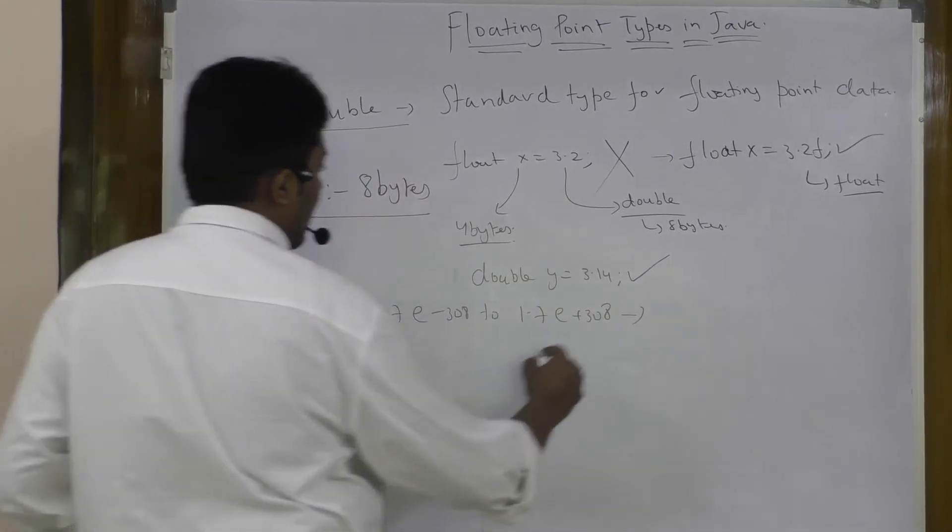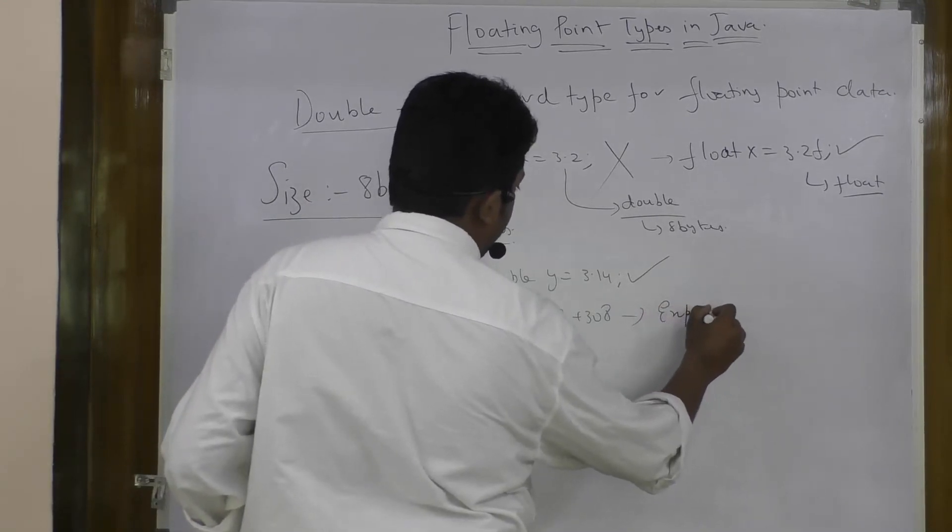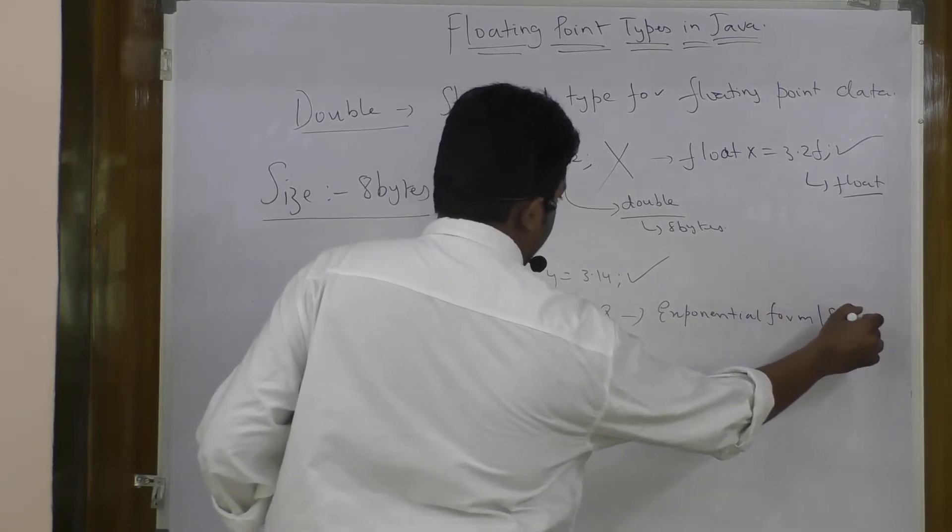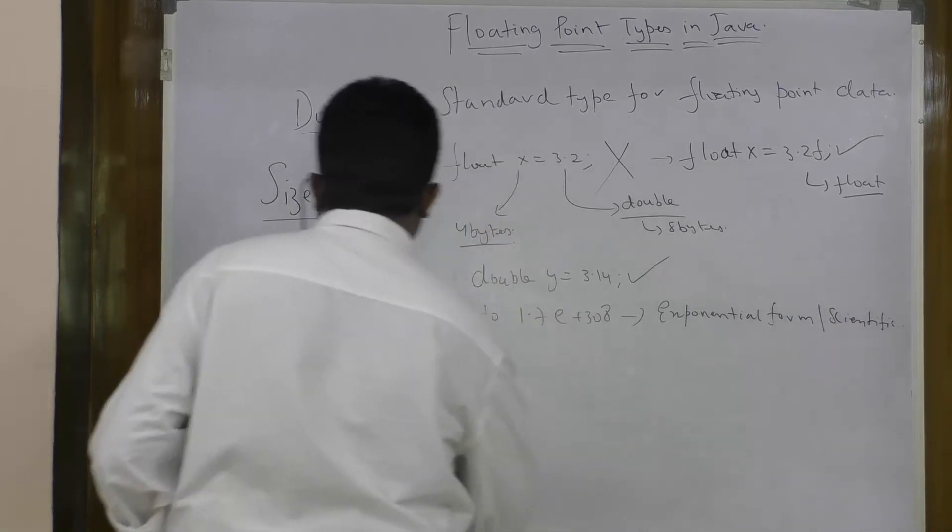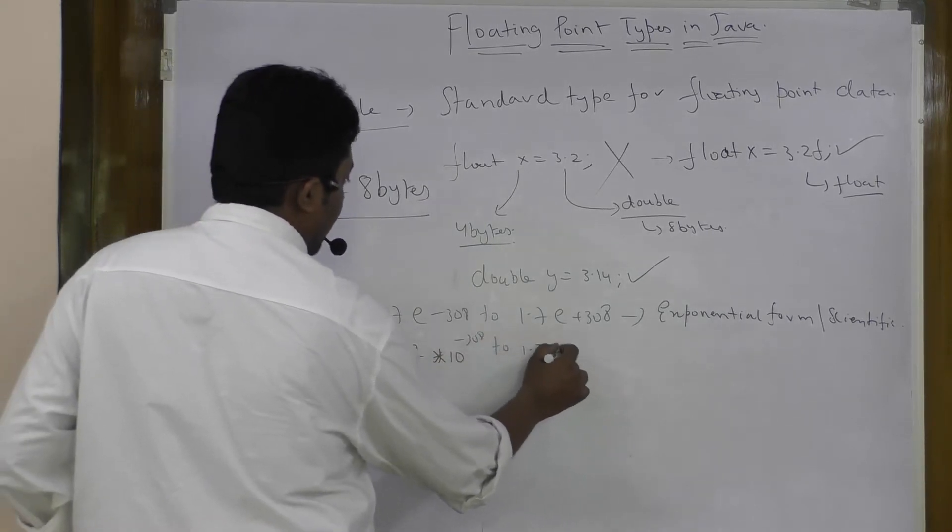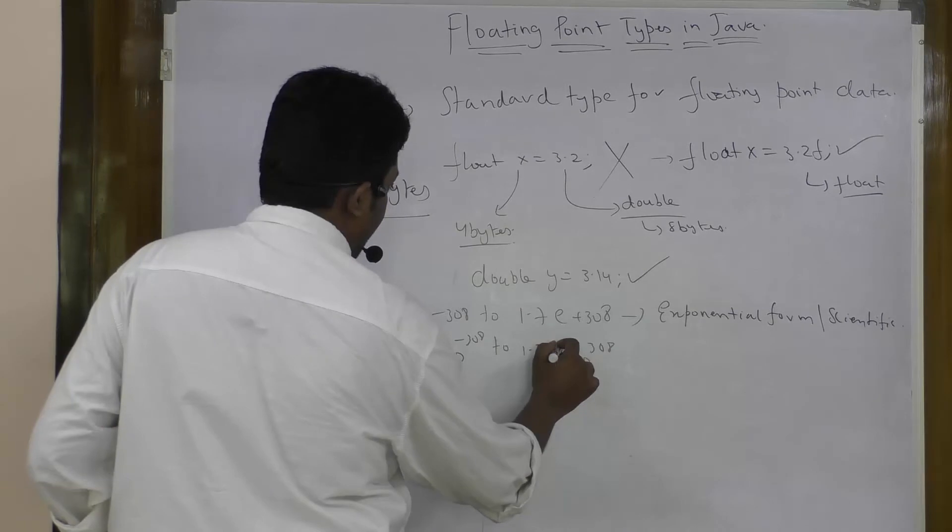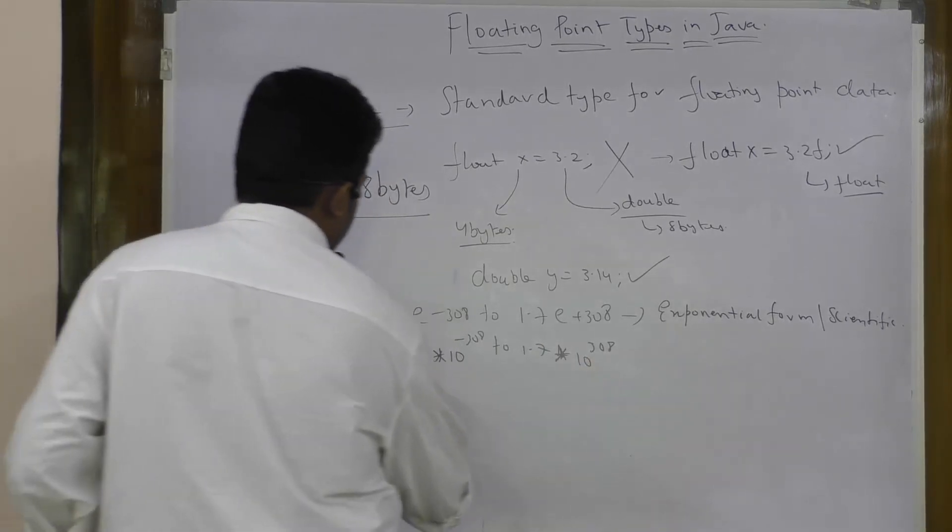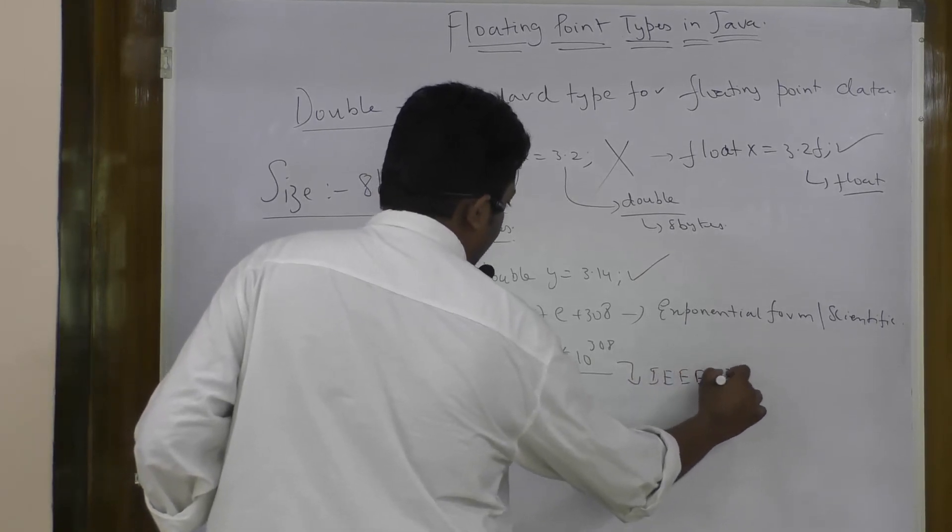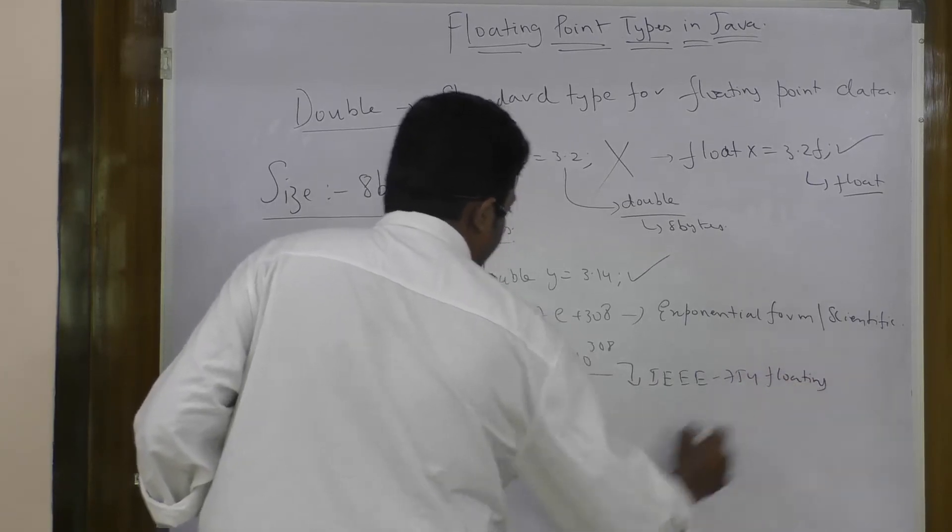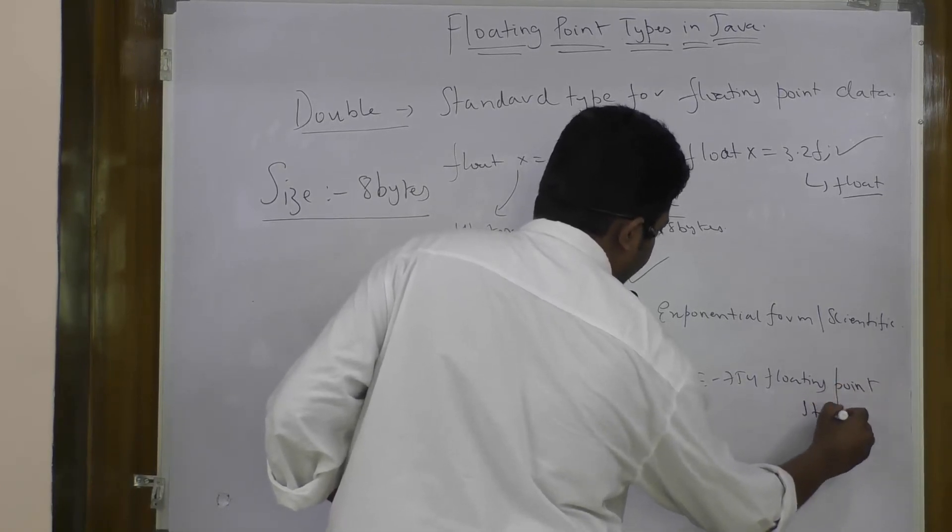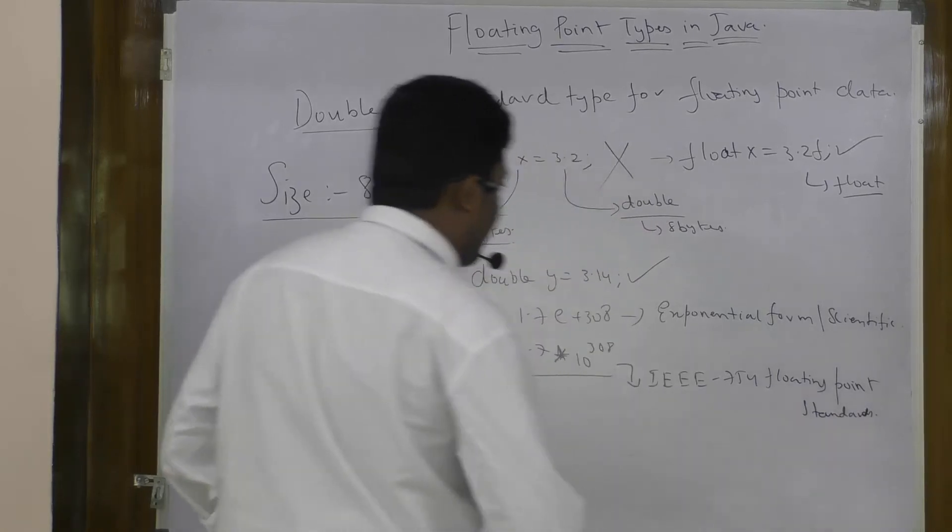This is known as exponential form or scientific notation, as we have seen for the floating point type. This means in reality, in real terms, this is equal to 1.7 into 10 to the power of minus 308 to 1.7 into 10 to the power of positive 308. This is the range of double. Again, this is according to the IEEE 754 floating point standards.